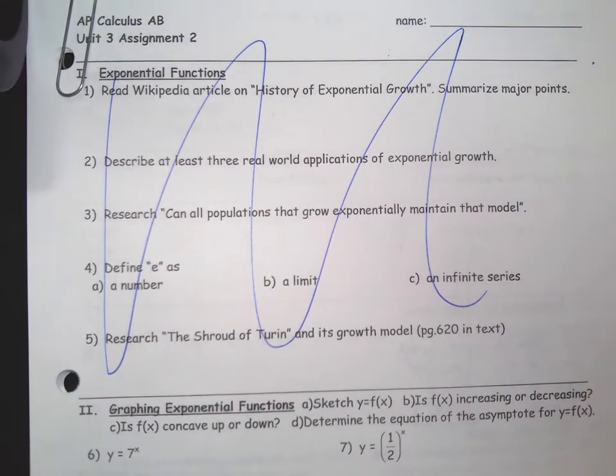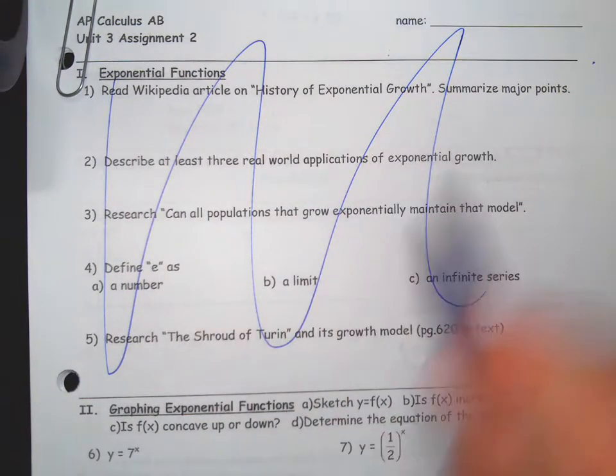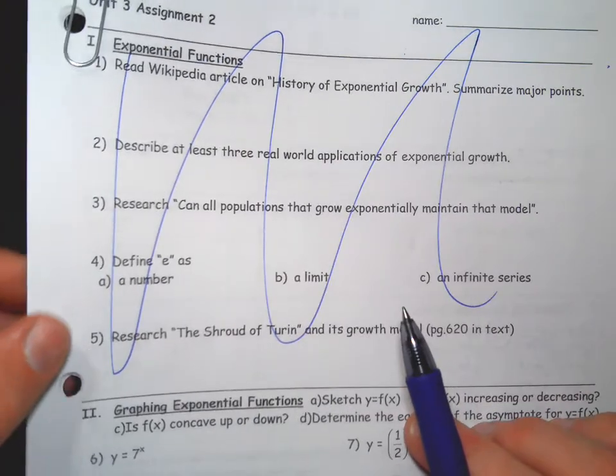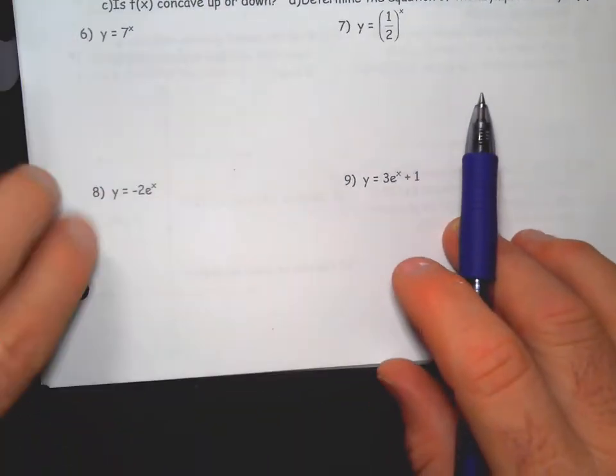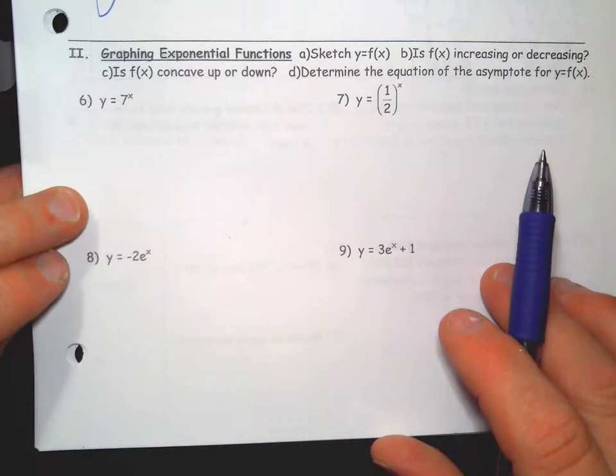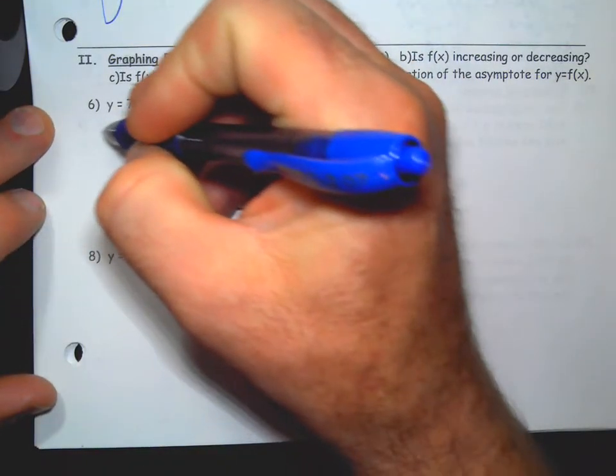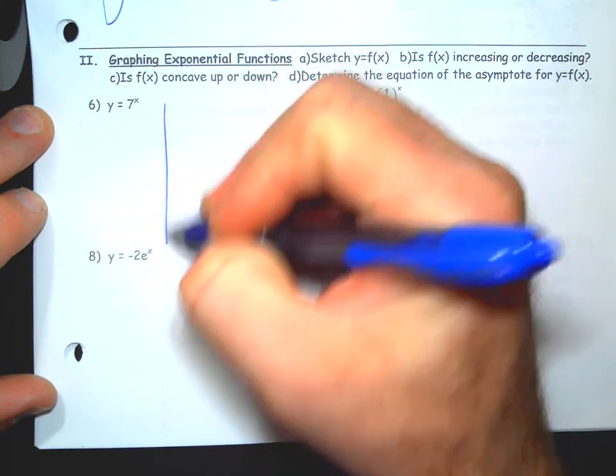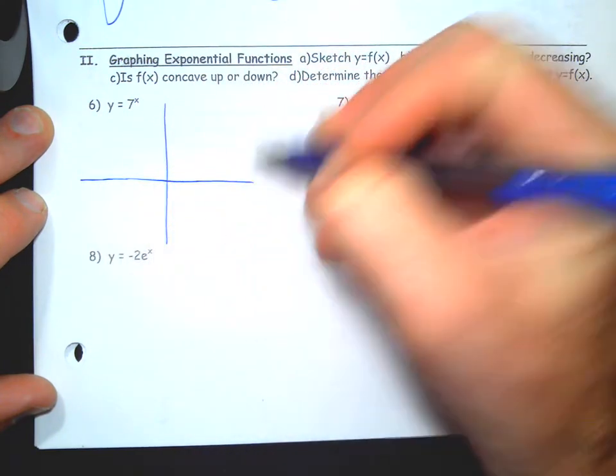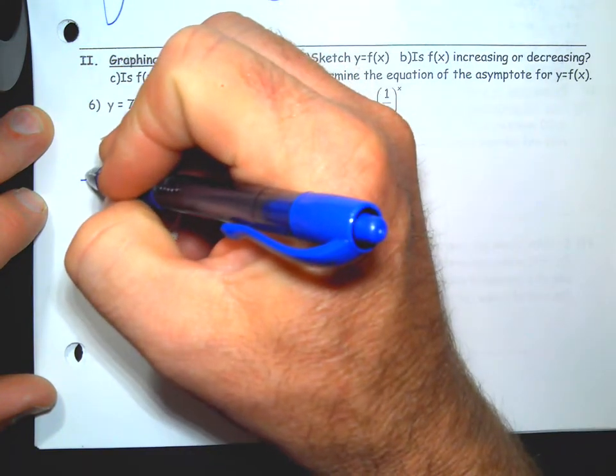Okay, this is unit 3 assignment 2, your worksheet. Probably doesn't have this on it, so I'm going to skip that. So you have some graphs and then you're answering a few questions on each of them. Start with a basic graph - general exponentials look like this.